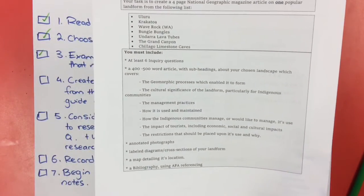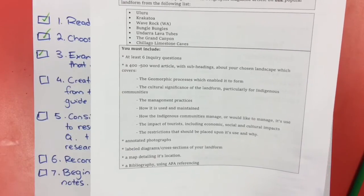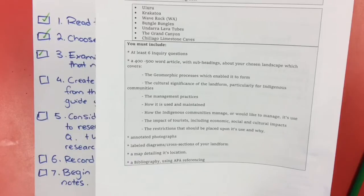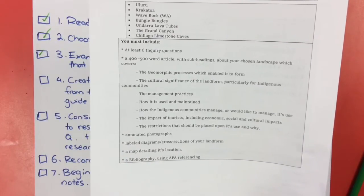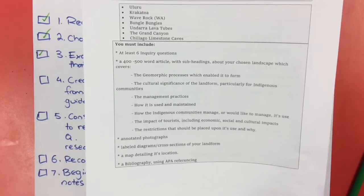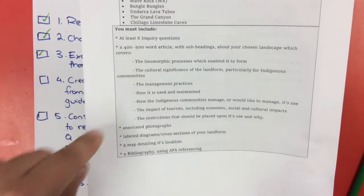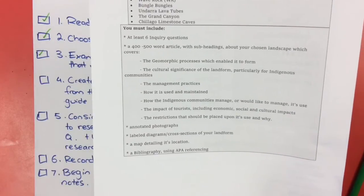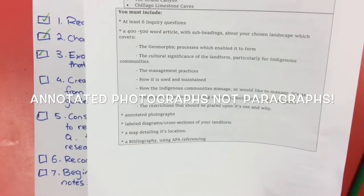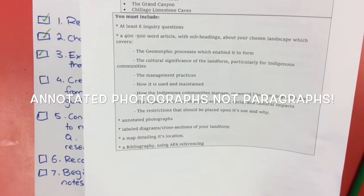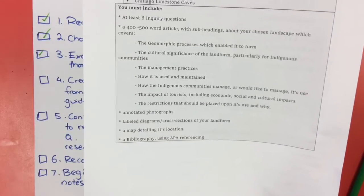You need to create at least six inquiry questions. You need to write your article in four to five hundred words. That seems like a lot, but it's actually not once you start to research. You need to talk about these following points here, so make sure you read those ones. You need annotated paragraphs, label diagrams, a cross-section of your landform, a map detailing its location, and a bibliography.